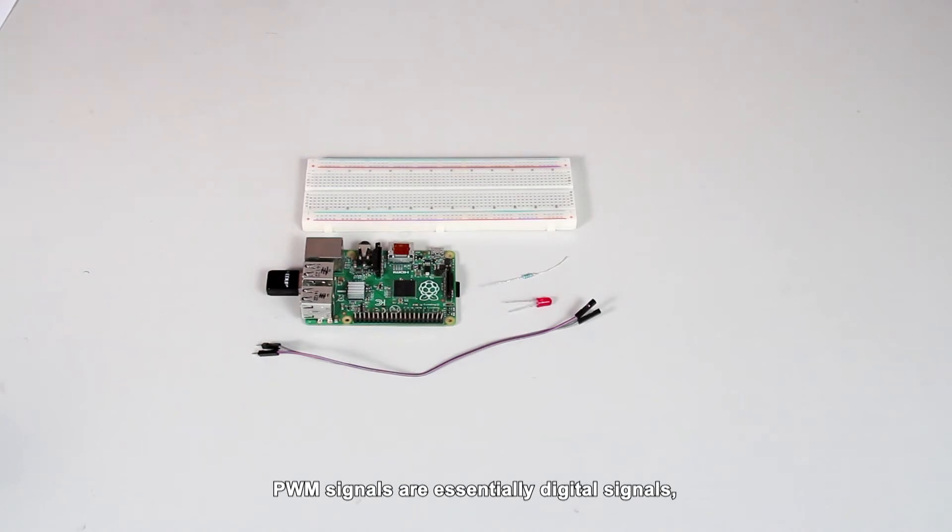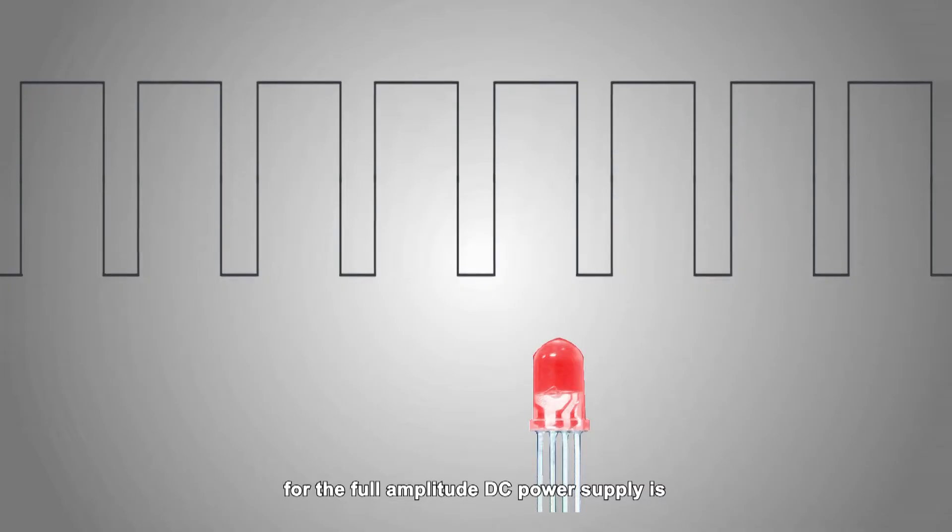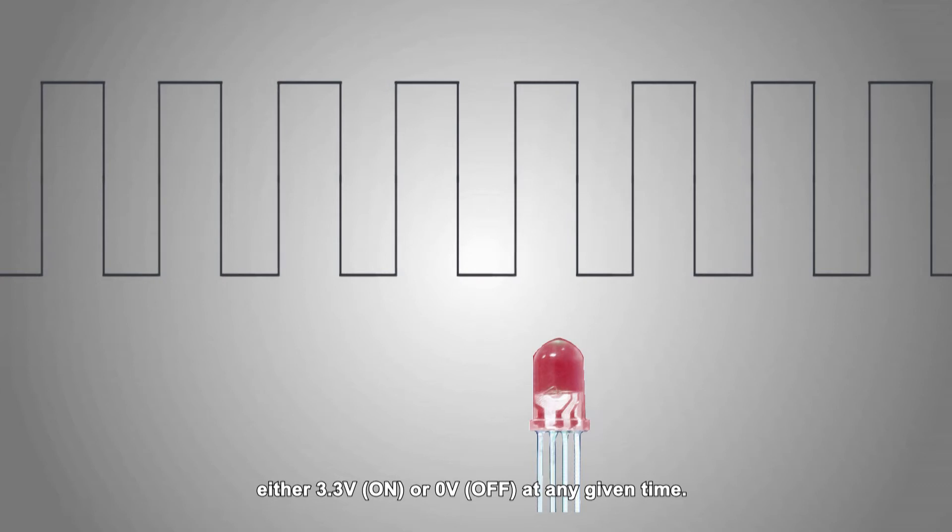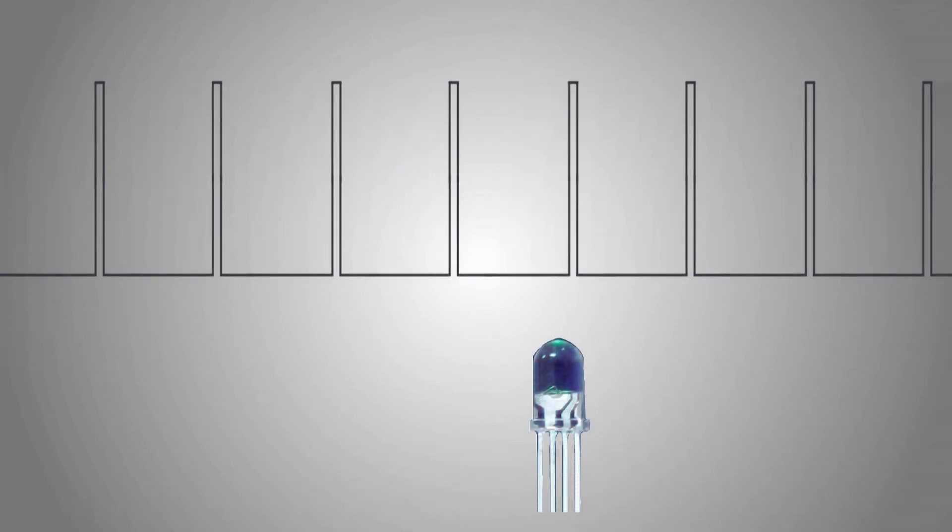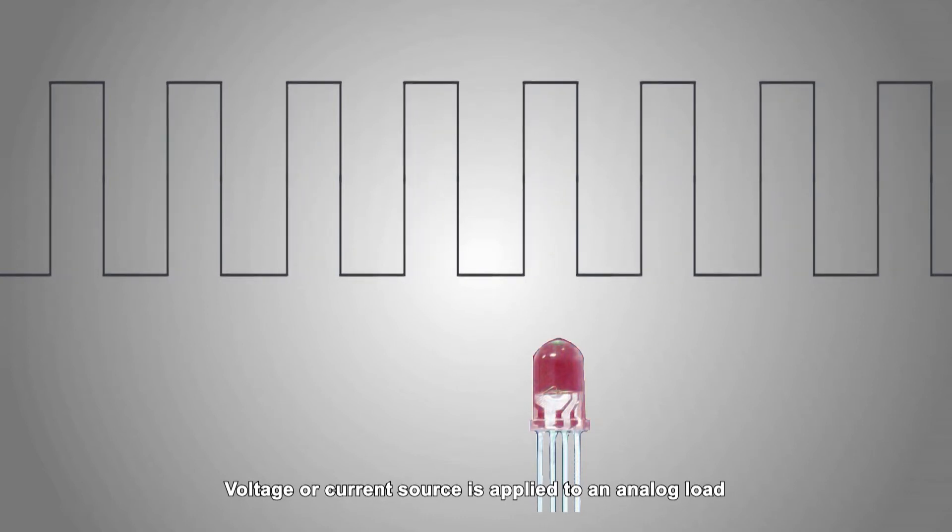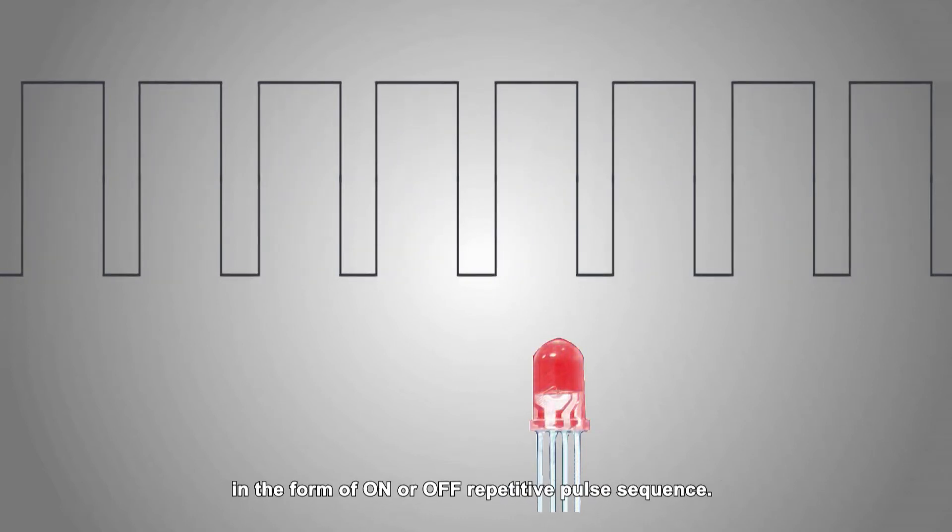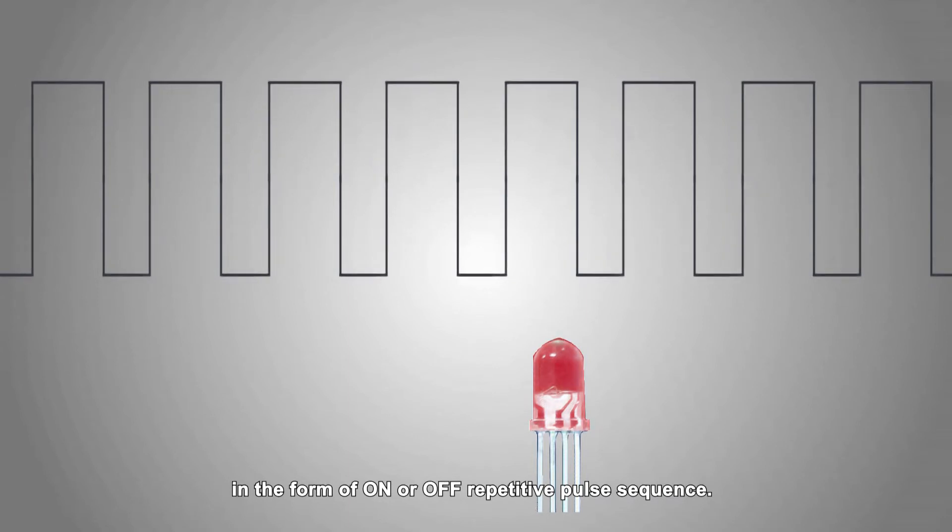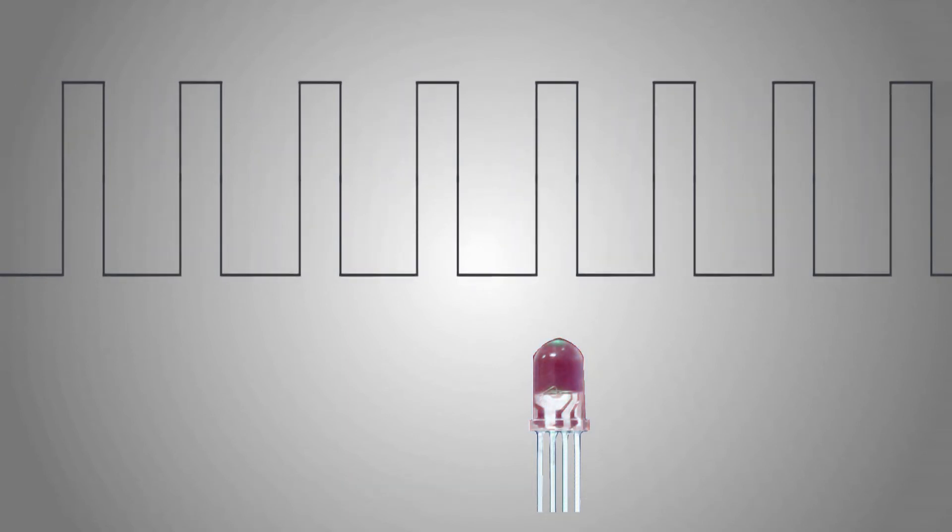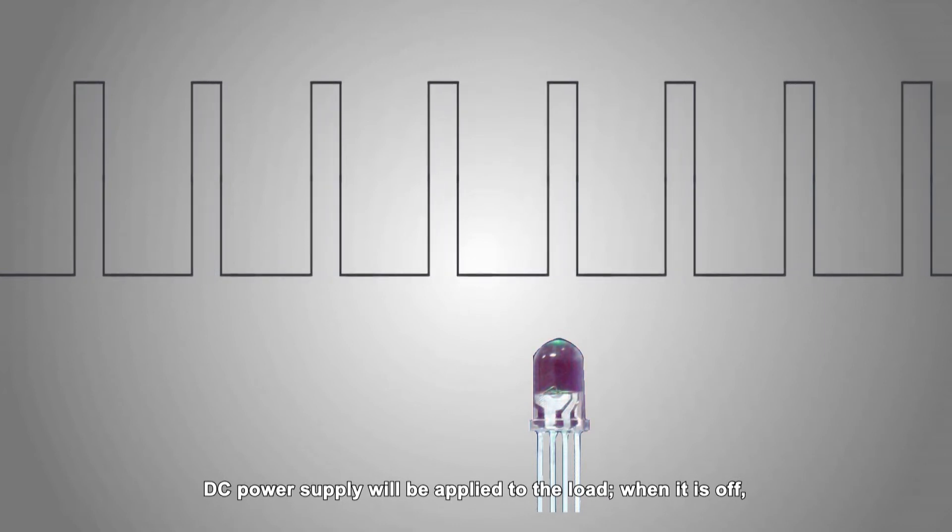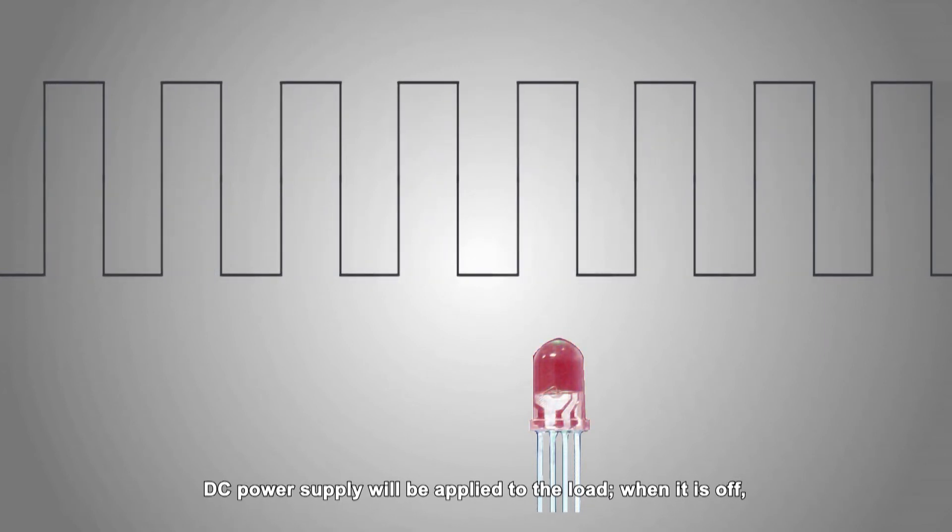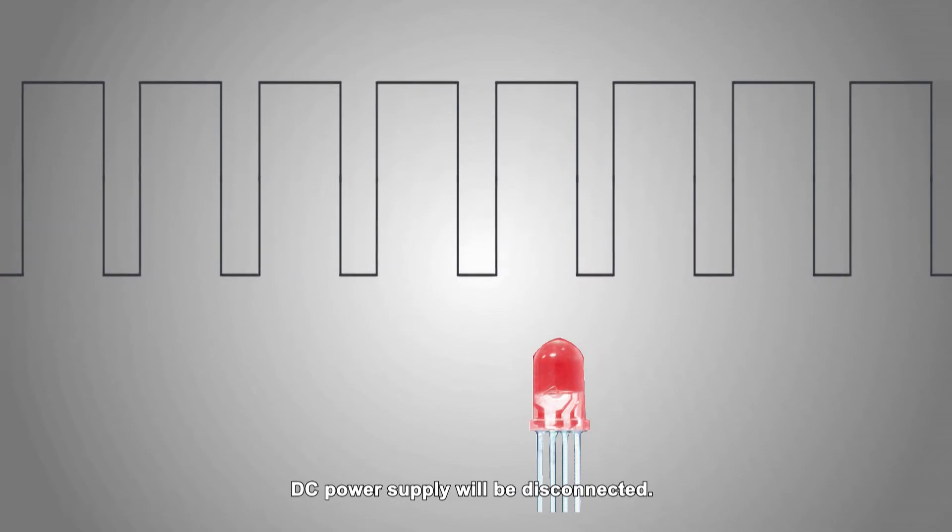PWM signals are essentially digital signals. For the full amplitude, DC power supply is either 3.3V or 0V at any given time. Voltage or current source is applied to an analog load in the form of on or off repetitive pulse sequence. When it is on, DC power supply will be applied to the load. When it is off, DC power supply will be disconnected.